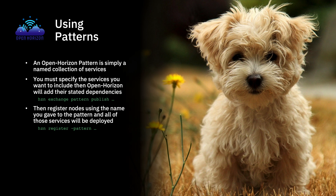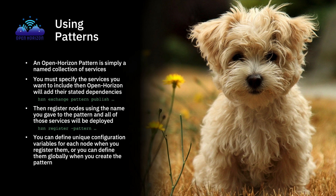You register your nodes using HZN register --pattern and then the name of the pattern, and all of those services will be deployed. You can define a unique configuration variable set for each node when you register them, or you can define them globally when you create the pattern. Note: only one pattern may ever be active on a single node.